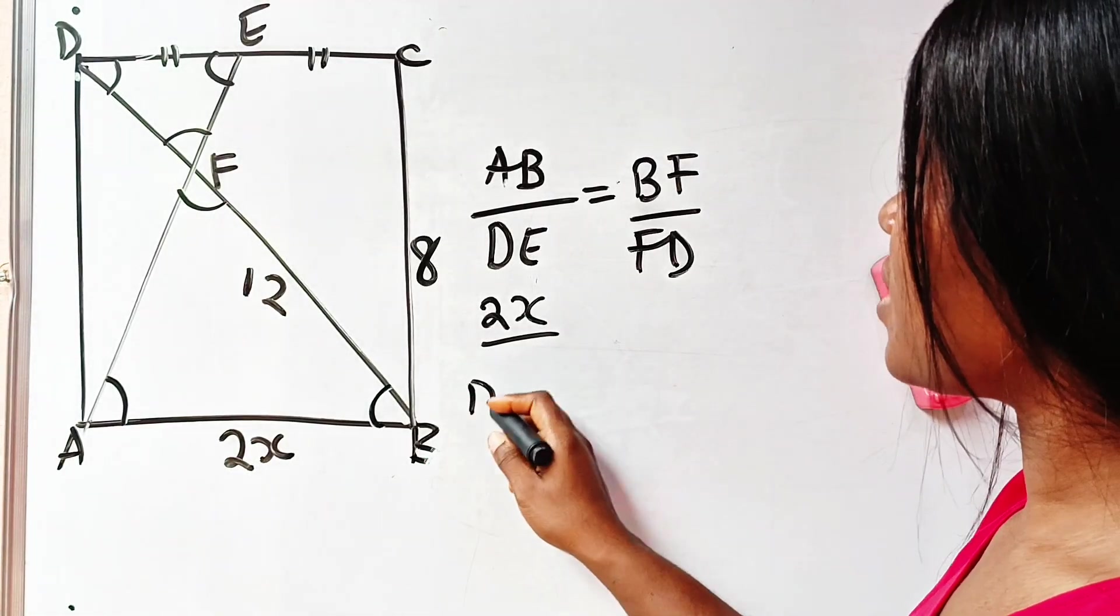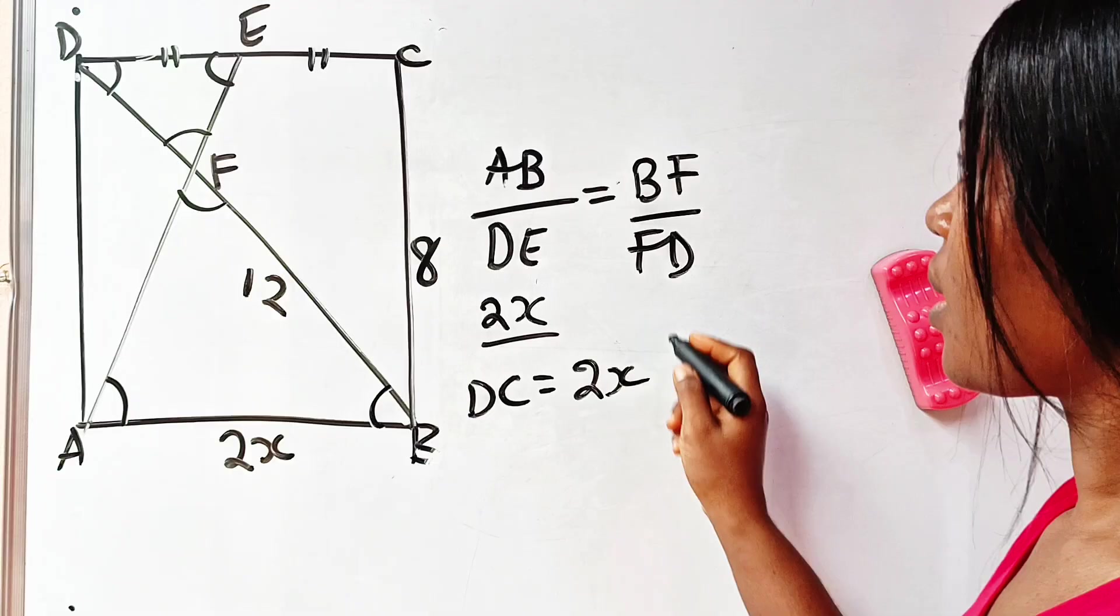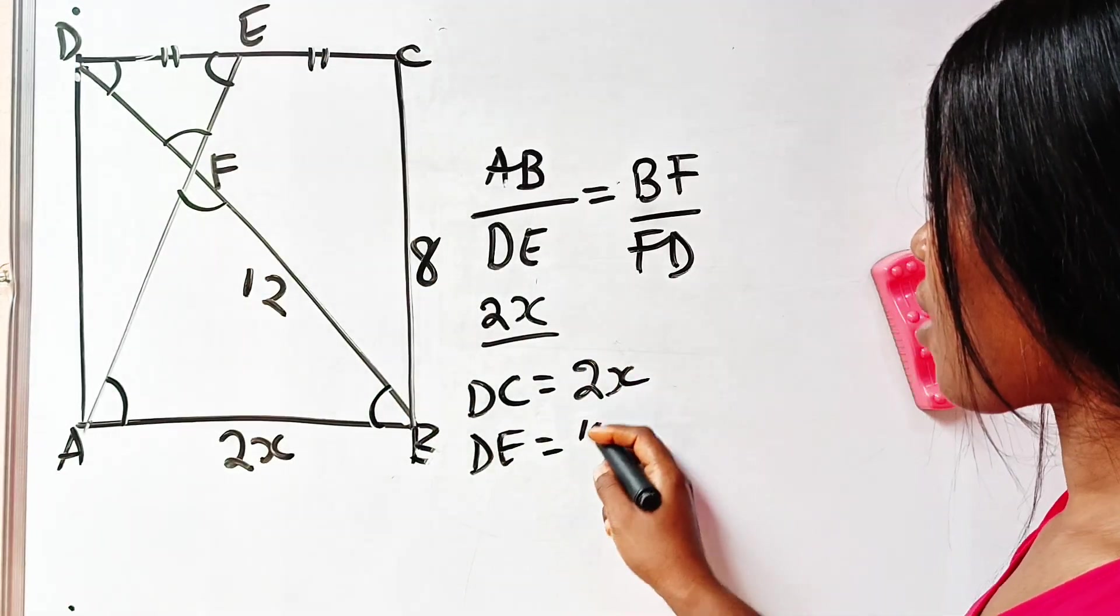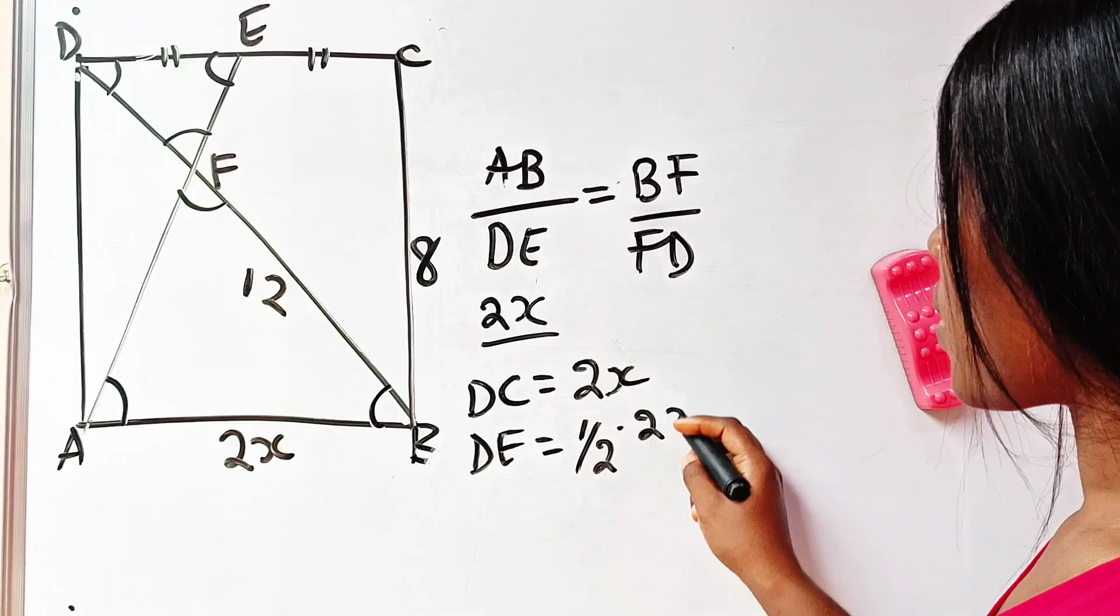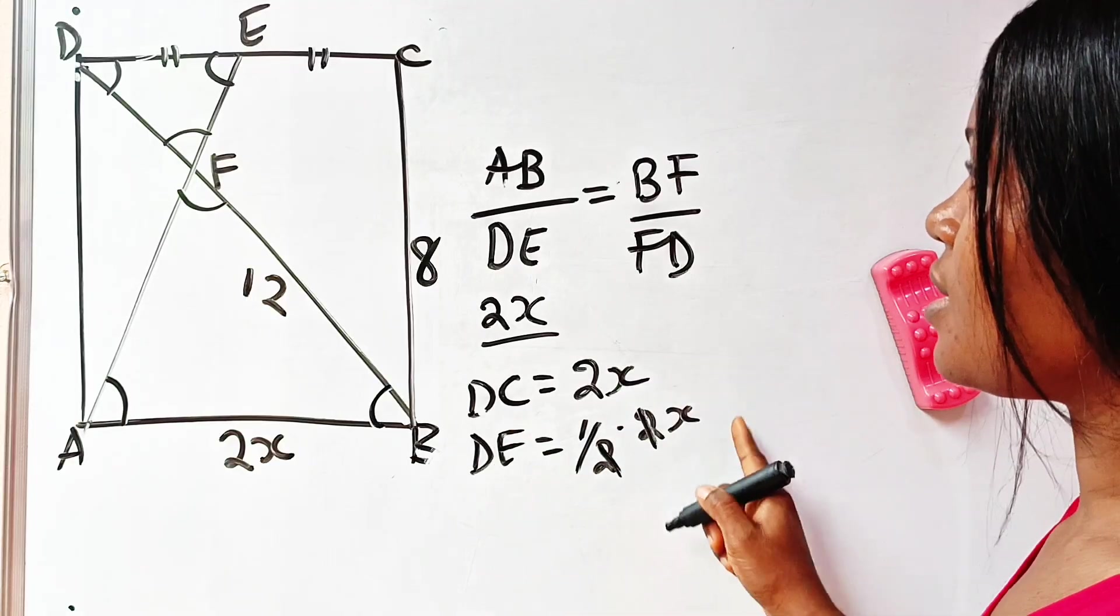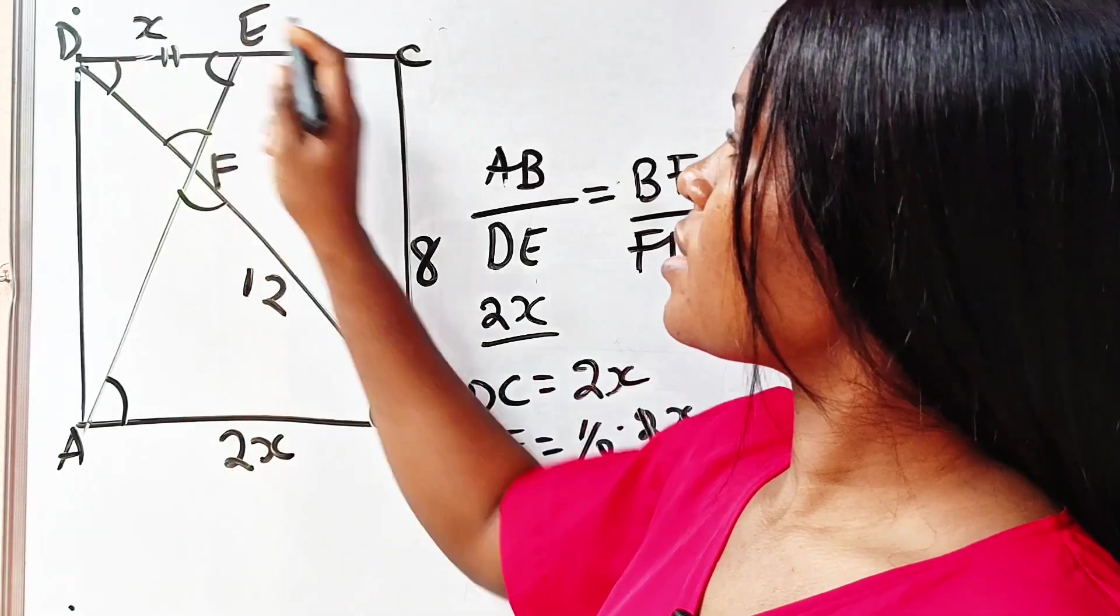So DE is half of DC. This simply means that DC is 2x as well, and DE is half of 2x—that is, half of DC. And when we divide this, we have that DE is x, so this place is x.